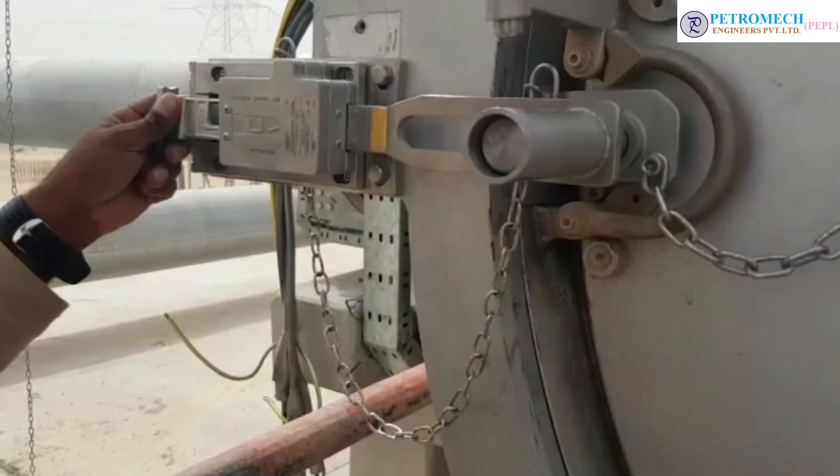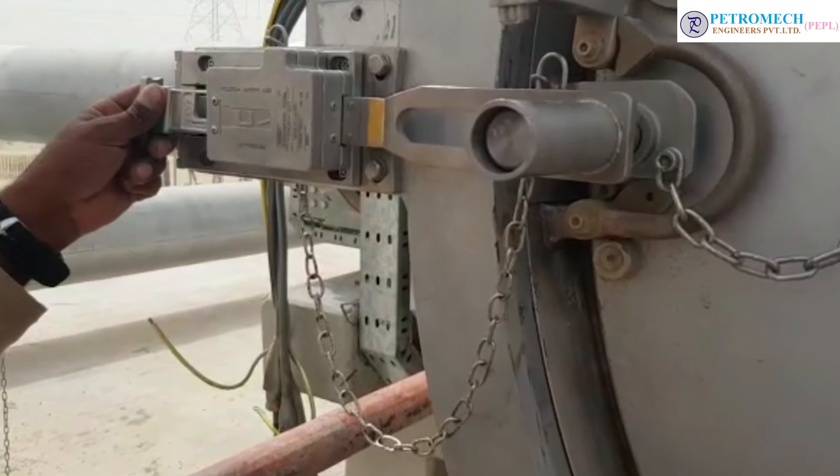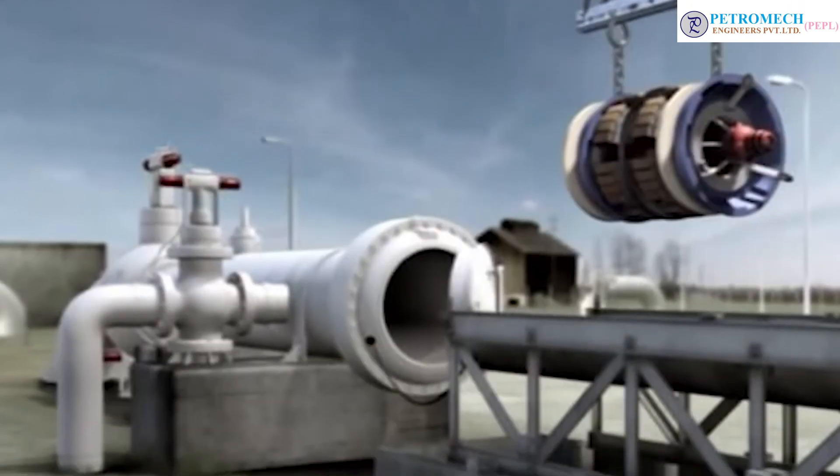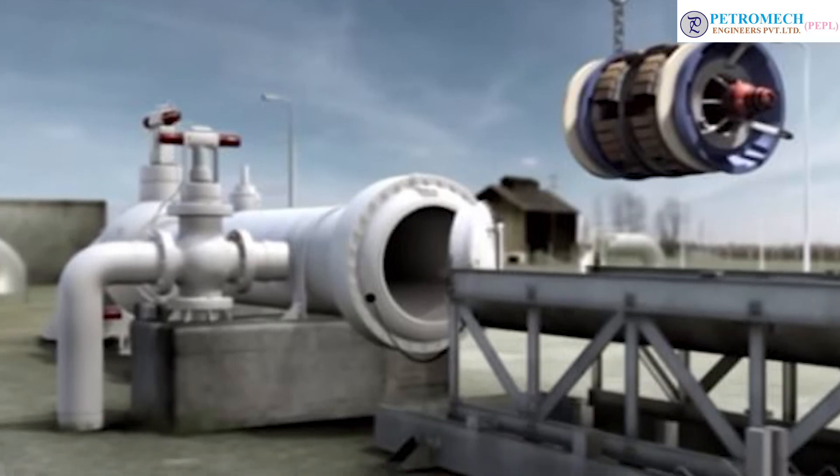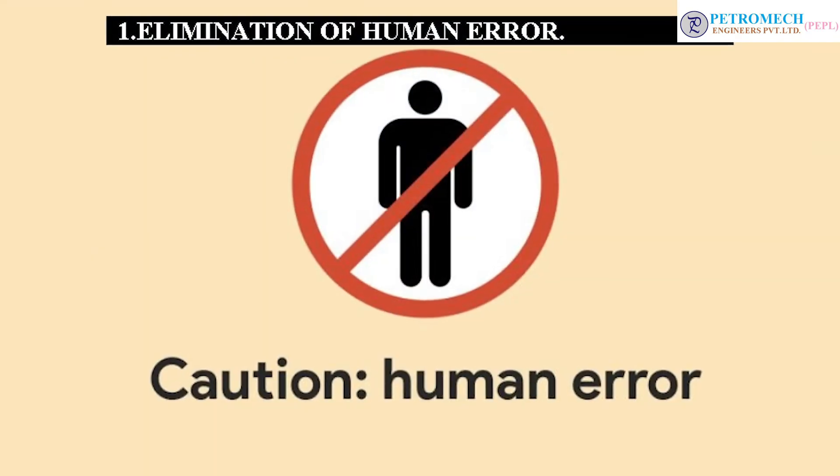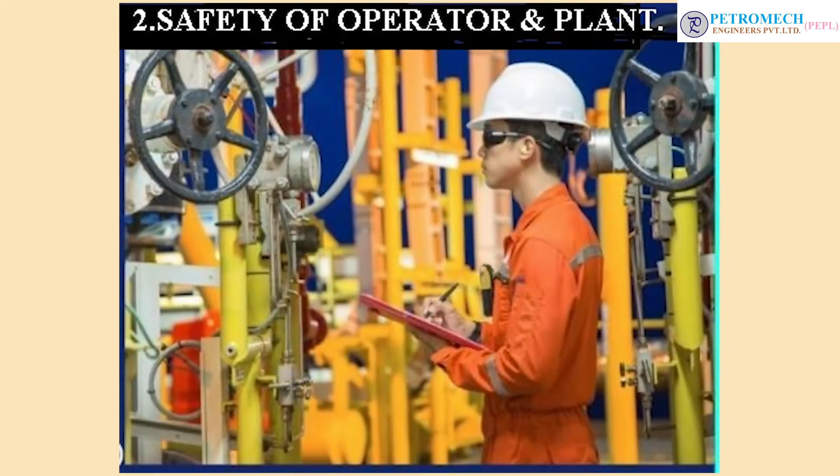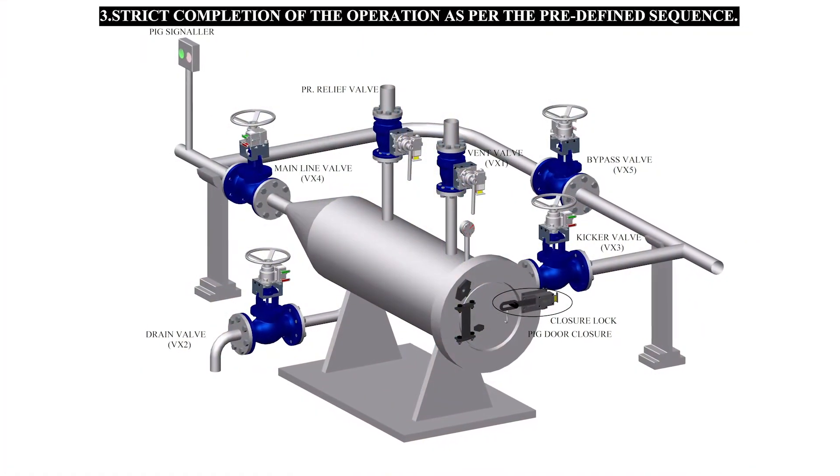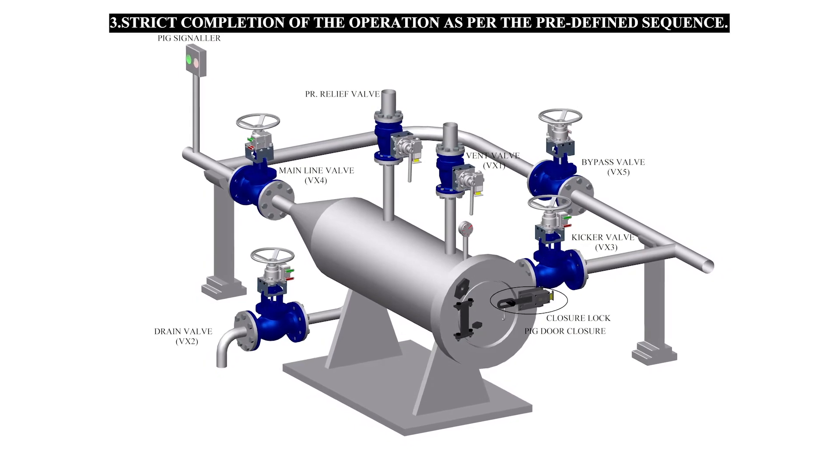Conclusion. With the use of mechanical interlocking systems, the critical operation of the pig launching system is carried out safe and hazard free and ensures: elimination of human error, safety of operator and plant, strict completion of the operation as per the predefined sequence.